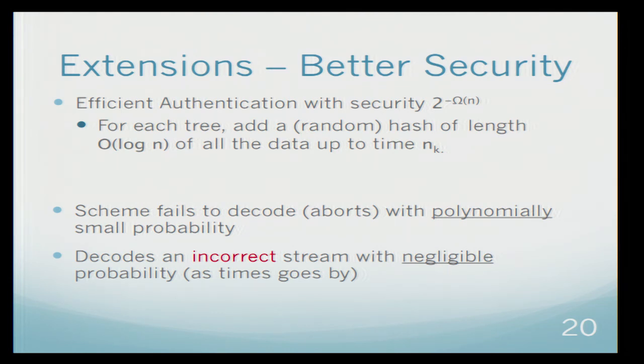What do I mean by that? First we just do it with some standard techniques like adding hash, and we will obtain the following situation. Our scheme will still fail or abort with polynomially small probability. Bob might say at some time, okay, I have too many errors. I don't know what's going on. I'm aborting. And this will happen with polynomially small probability.